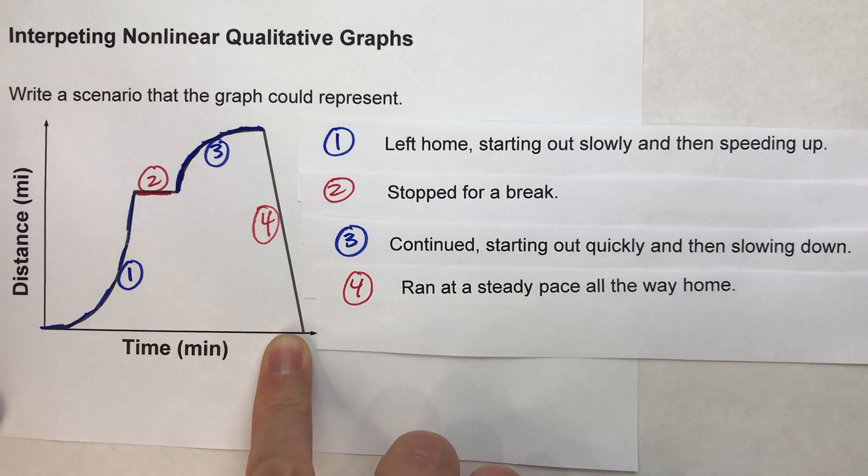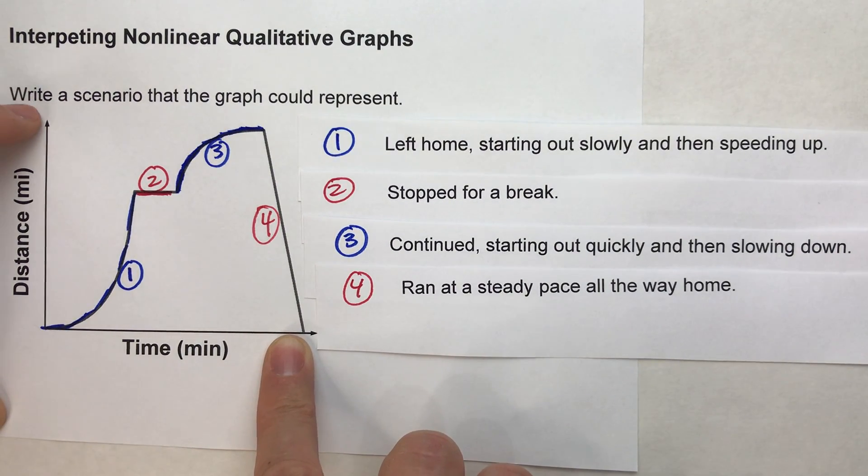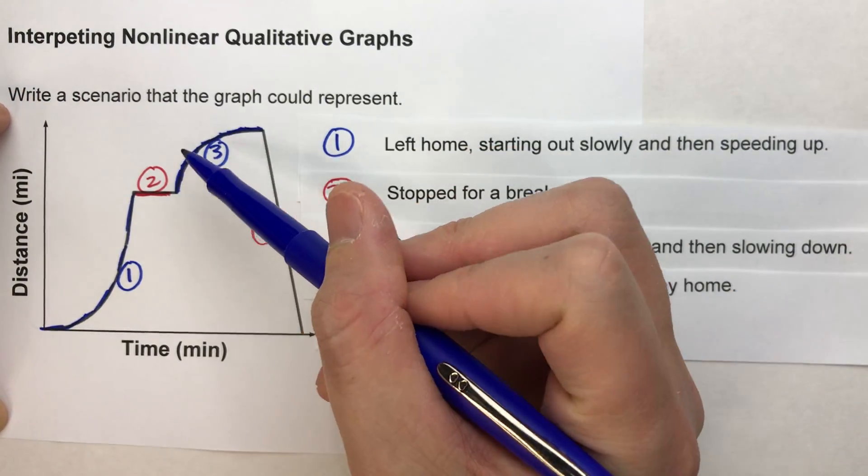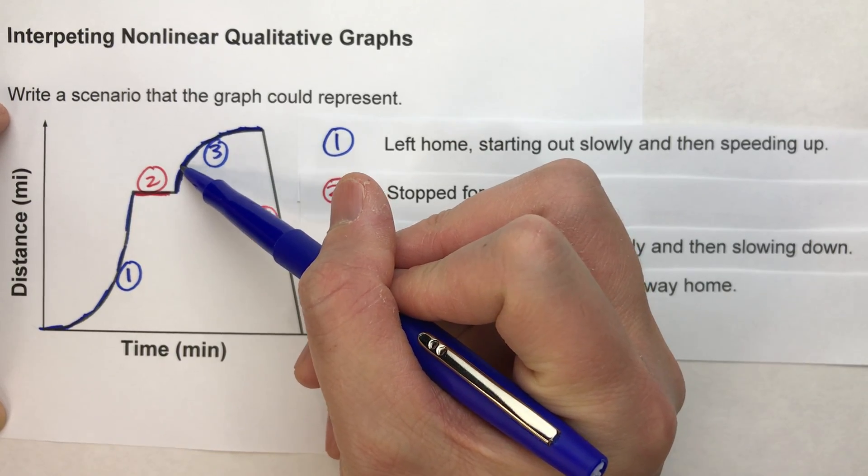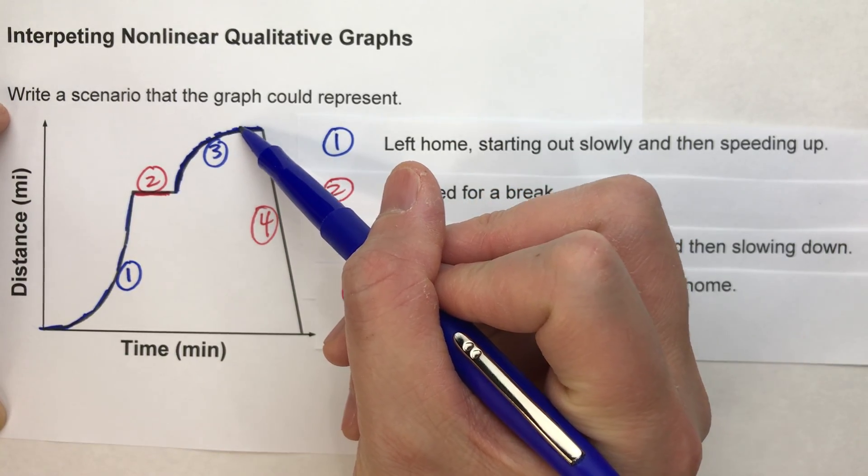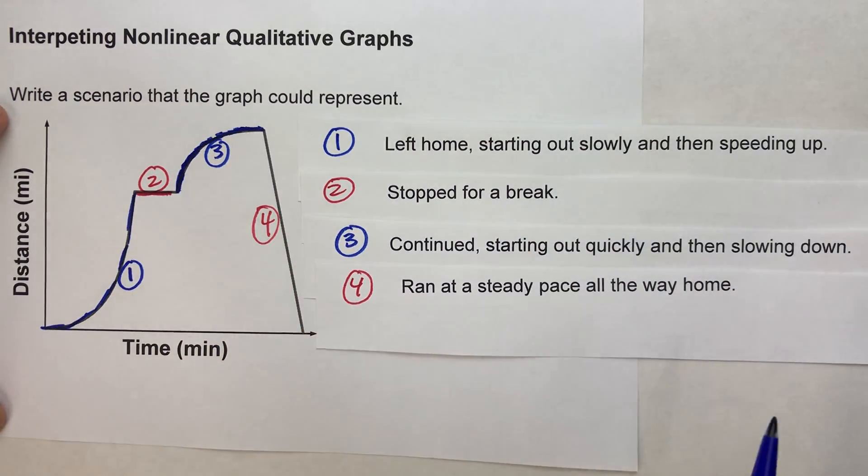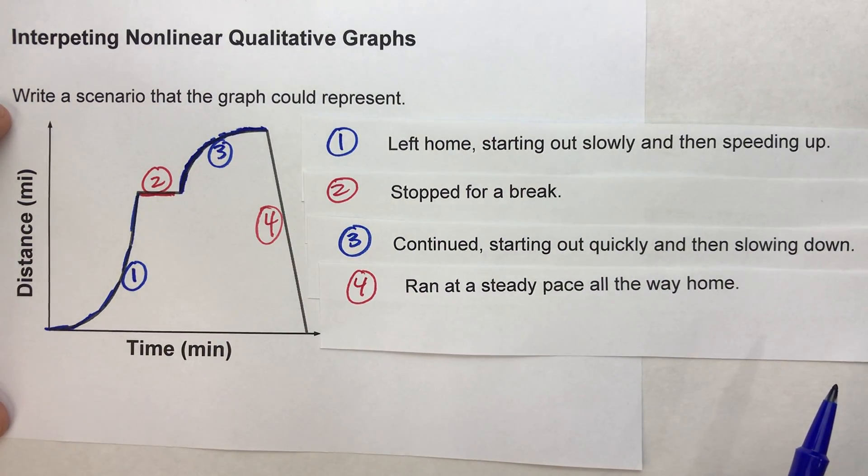So the key to nonlinear parts of qualitative graphs is really thinking about each part as almost a series of segments. And think about what's happening with each segment. Is it starting out steep and then gradually getting flatter? Or is it starting out flat and gradually getting steeper? That'll help you interpret what's going on.